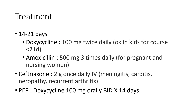Now for treatment options. Doxycycline is the first-line medication — 100 milligrams twice daily for 14 to 21 days. It was previously contraindicated in children under eight due to potential issues with tendon and teeth growth and mineral absorption, but it's now approved for shorter courses. If the course is less than 21 days, such as a two-week course in a child, it's considered safe and will not have a detrimental impact on mineral or bone development.